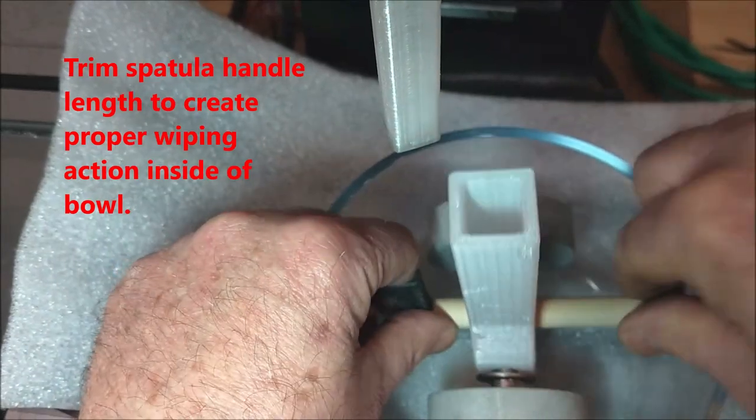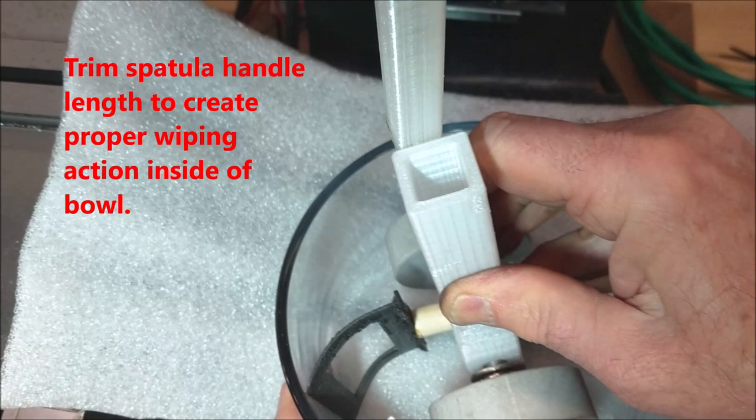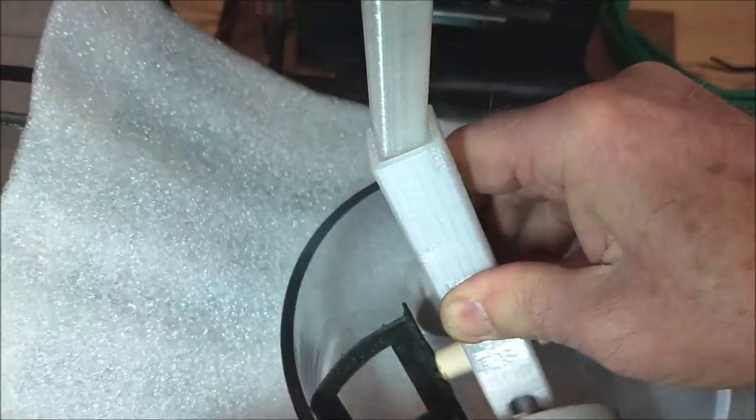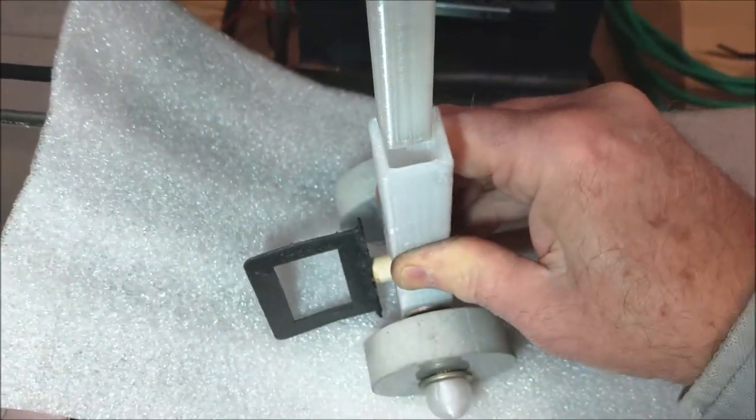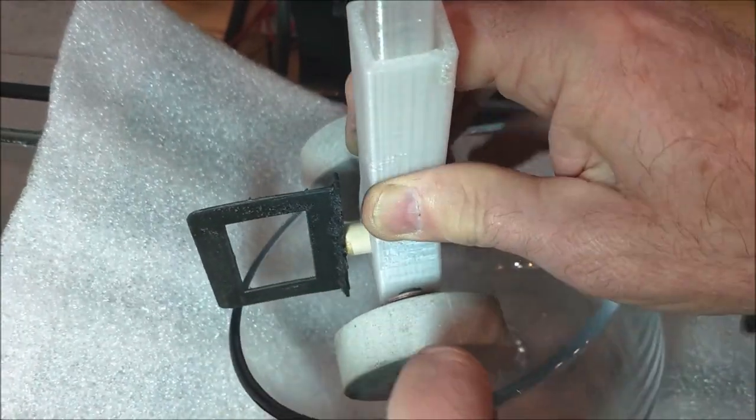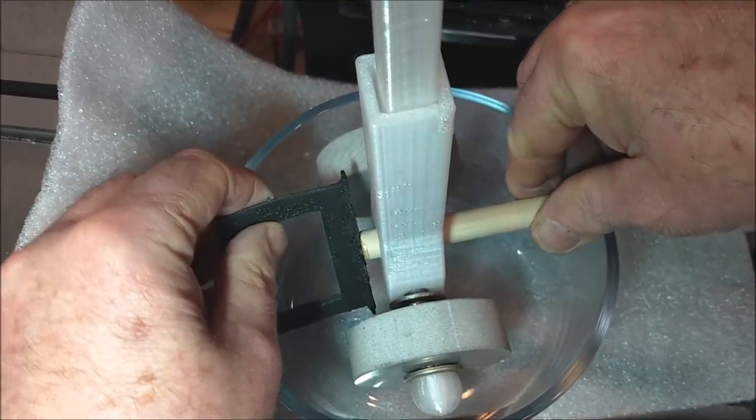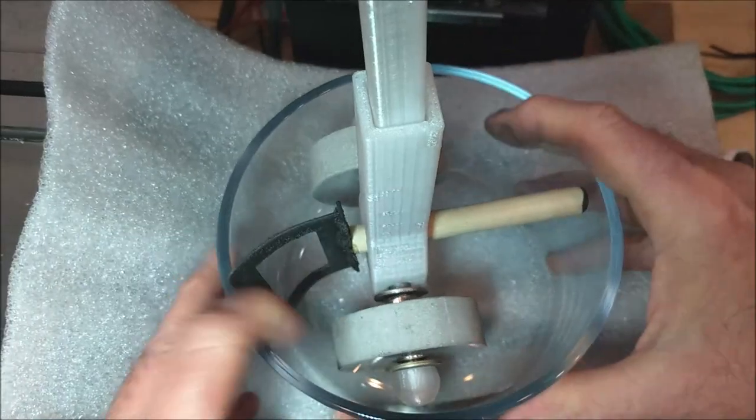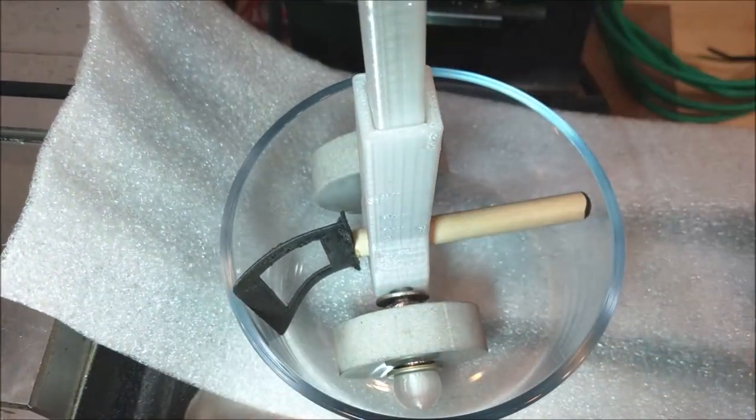We're going to stick that in the hole here and try to get this assembly to come together. No guarantees how this is going to work or not work but let's give it a shot. So we're going to slide this on the shaft, slide the bowl underneath it, tuck our spatula down there, get everything kind of pressed in place here.